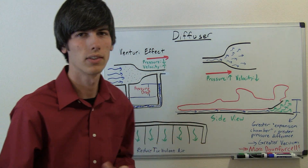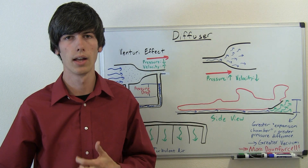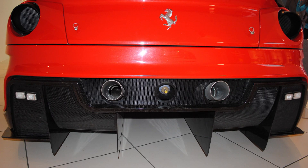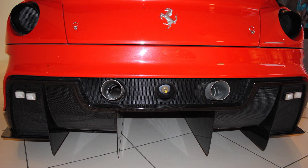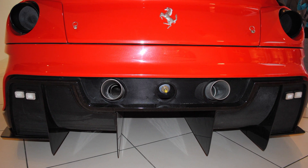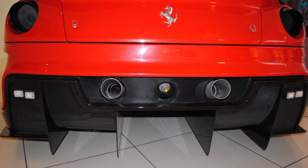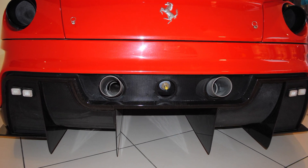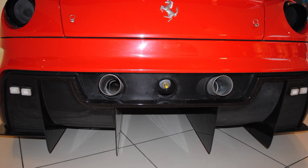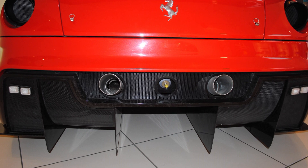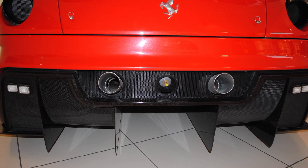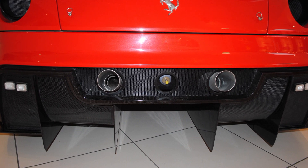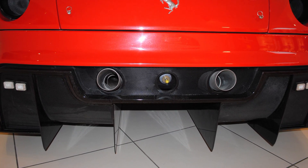That's the basic idea of a diffuser, and now I'll show a few photos. Here we have the rear diffuser of a Ferrari 599 XX. This photo was taken at the Galleria Ferrari in Marinello. You can see those dividers at the bottom keeping the air linear, and you can see that the distance from the very back of the car to the ground is a big gap — that's the large expansion chamber.